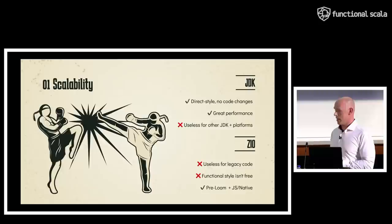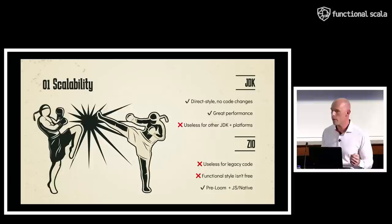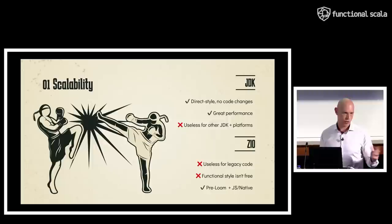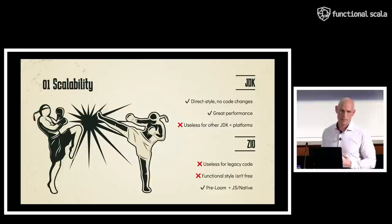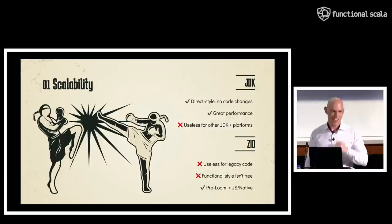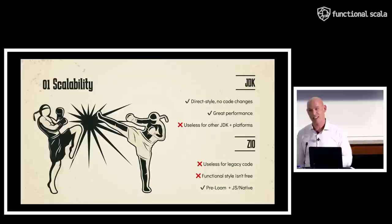ZIO, on the other hand, is not useful for legacy code — it won't make existing code more scalable. You program in the ZIO style, which is practically its own language. The functional style isn't free: allocations have cost, and there's performance overhead in a purely functional library. The pro is it works before Loom as well as after, and on other platforms like JavaScript and Native. For async programming, JDK wins this round — JDK wins for sure.